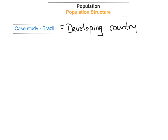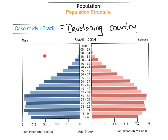For population structure you need to know two case studies — one for a developing country and one for a developed country. The case study for the developing country is Brazil. Here's Brazil's population pyramid. The first thing we can see is that Brazil has a really wide base, and a wide base means they've got a high birth rate. In developing countries you typically find a really wide base because of a high birth rate.